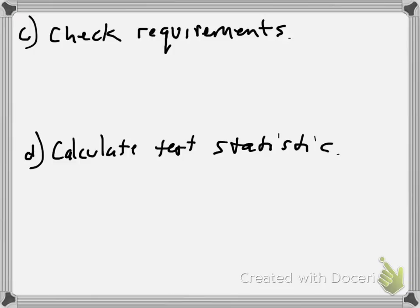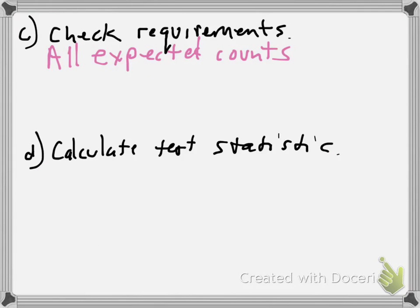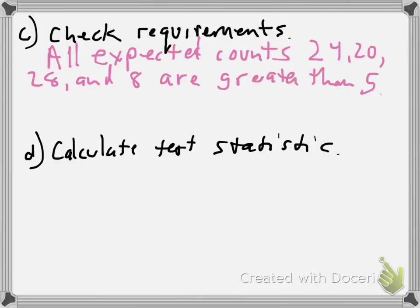I'm gonna switch from orange to magenta. So check the requirements. What are the requirements for a chi-squared goodness of fit test? That all expected counts are greater than five. I'm gonna go back and look at my expected counts: 24, 20, 28, and 8. 24, 20, 28, and 8 are greater than five, so check.